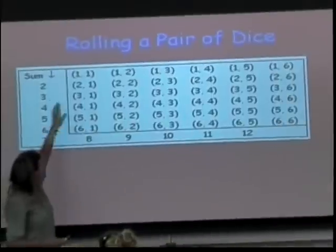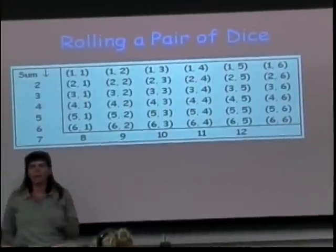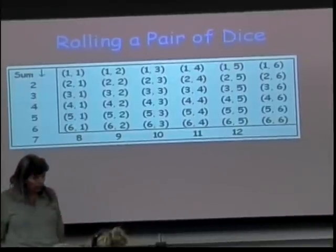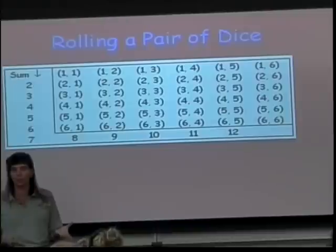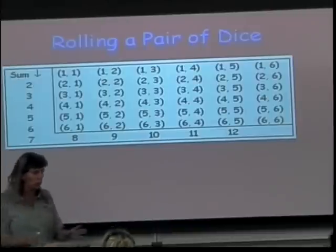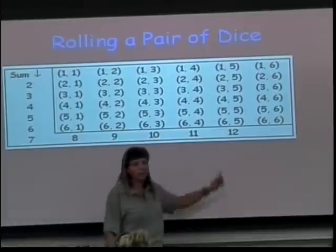Although there are only 2 through 12 that can happen, there are lots of different ways for them to come out. So we have to count all the ways that you can get those sums when you roll two dice.